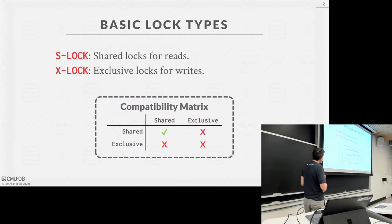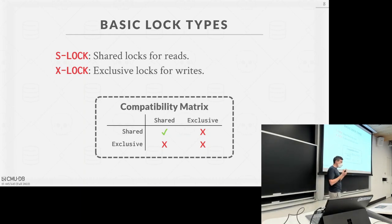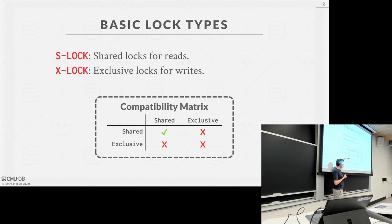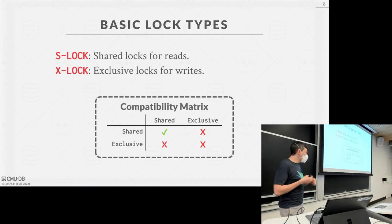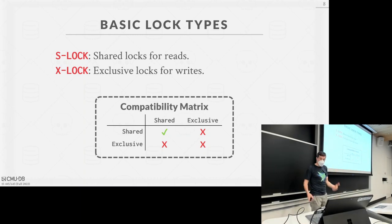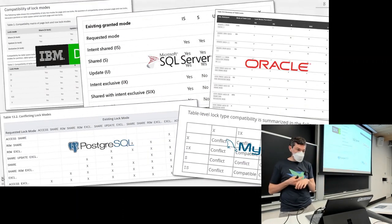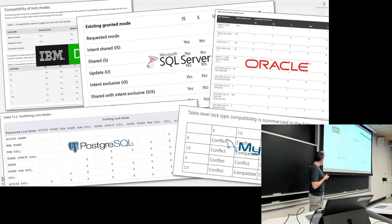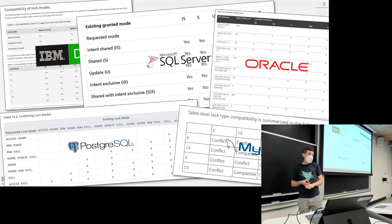For higher-level logical locks, there are basically two types: shared locks and exclusive locks. If you have a shared lock, somebody else can also acquire a shared lock on the same object. But an exclusive lock is incompatible with all other lock types — only one transaction can hold an exclusive lock at a time. For the first half of this lecture, we'll assume only these two types exist. In reality, there are many more, including intention locks, as shown by the compatibility matrices of the top five major relational databases. We'll also see granularity at different levels: tables, pages, tuples, attributes.